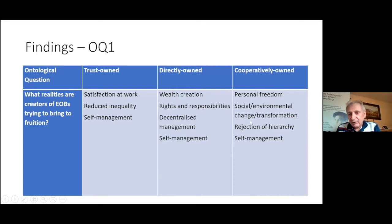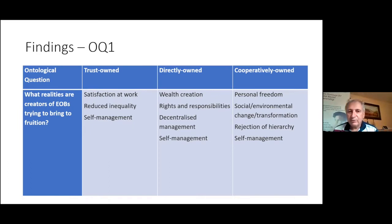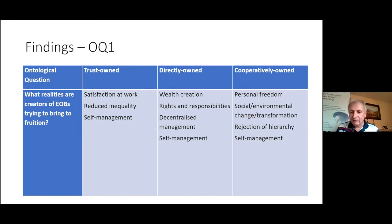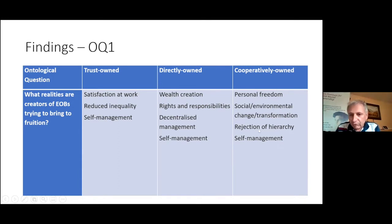There are things that are different and things that are similar across the forms. Self-management clearly goes across all legal forms — every legal approach to employee ownership seeks to take labour out of the market, so labour is no longer treated as a commodity. You're trying to end wage labour in a sense, even though they might pay wages. There's more emphasis on wealth creation in the directly owned, more emphasis on personal freedoms in the cooperatively owned, and a stronger rejection of hierarchy in co-ops.